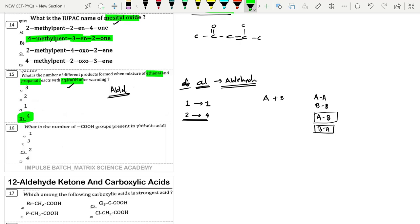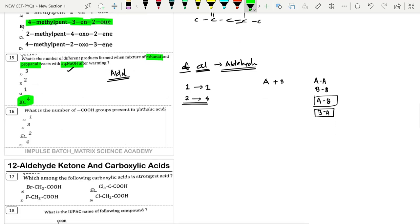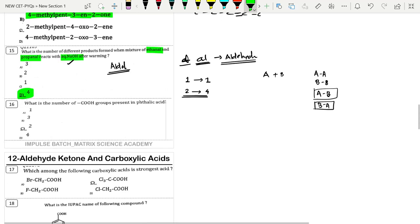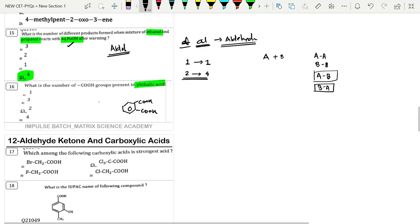Number of COOH groups present in phthalic acid. What is the structure of phthalic acid? There is benzene and we have two COOH groups connected. What is benzene? Two COOH groups are connected. The answer is option C.